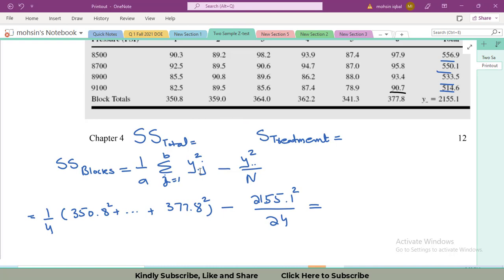Here Y dot J equals all the sum of these blocks. J means blocks, the vertical columns. So 350.8, 359.04, 364.4, and so on. I will take the square of all the terms and then add them. This summation means to add all of these terms, and 1 by A is the number of treatments.